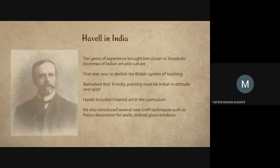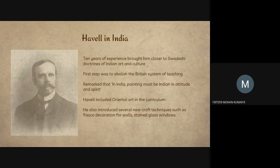In India, he drew on years of experience writing closer to Swadeshi doctrines of Indian art and culture. A key step was to abolish the British system of teaching. He remarked that in India, painting must be Indian in attitude and spirit. Havell included oriental art in the curriculum and also introduced several Indian craft techniques such as fresco decoration for walls and stained glass windows.